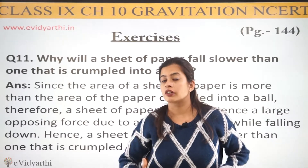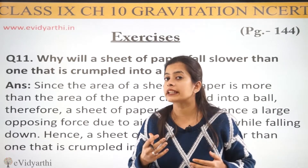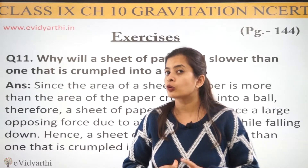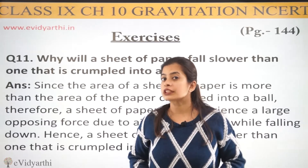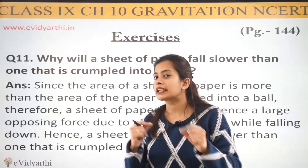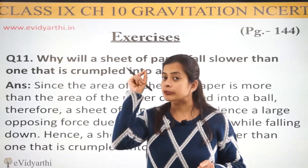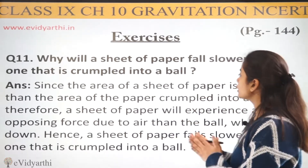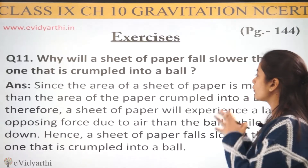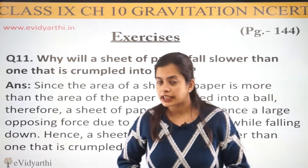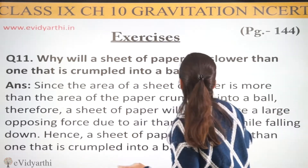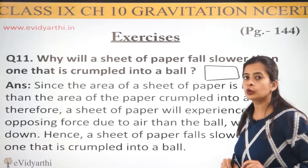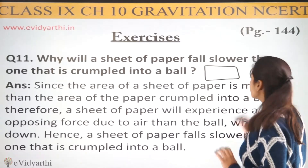To uski jo movement hai, uska jo pura path hai, woh ball ki comparison mein slow kyu hai? Kyunki unka point ye hai ki hai dono hi sheet of paper, lekin dono ki shape mein farak aa gaya, aur sabse bada reason — dono ki area mein farak aa gaya. So since the area of a sheet of paper is more than the area of the paper crumbled into a ball. Agar humara paas pura sheet of paper hai — for suppose yeh humara sheet of paper ho gaya — aur same paper ko agar mein pura crumble kar doon aur ek ball ki shape mein bana doon, so yeh humara ball ho gaya.